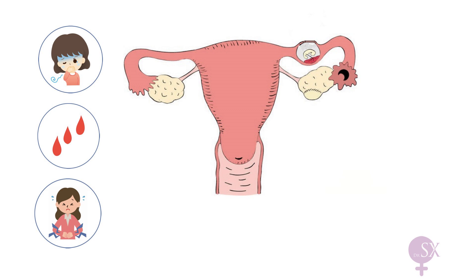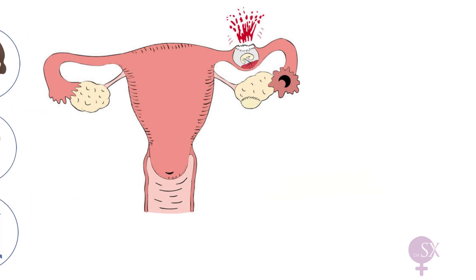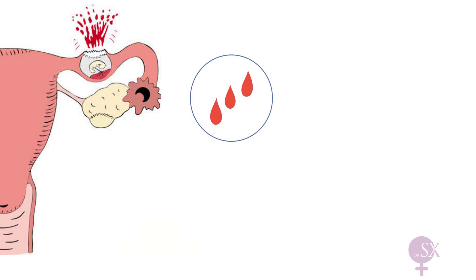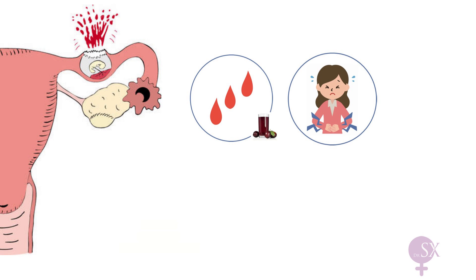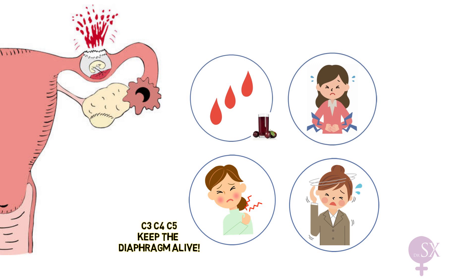On the other hand, if the ectopic pregnancy continues to grow, at some point it will run out of space and may rupture, causing massive hemorrhage — a major emergency in gynecology. These patients might present with bleeding PV, which is typically dark in color and described as resembling prune juice. This is important when distinguishing an ectopic from a miscarriage, where the patient will present with bright red bleeding. They might also present with very severe abdominal pain, shoulder tip pain — which occurs when bleeding blood irritates the diaphragm, resulting in referred pain to the shoulder due to the C3, C4, C5 dermatomes — and, if there is ongoing hemorrhage, dizziness, fainting, and shock.